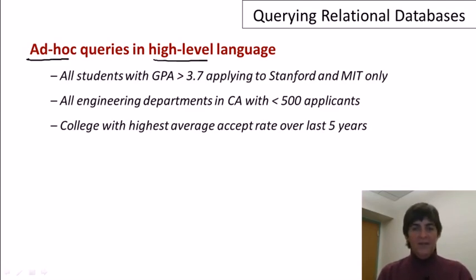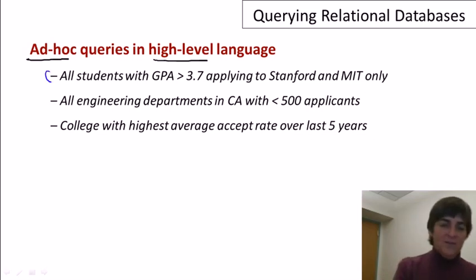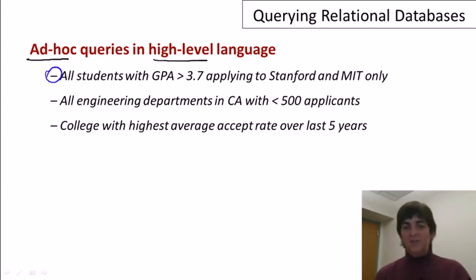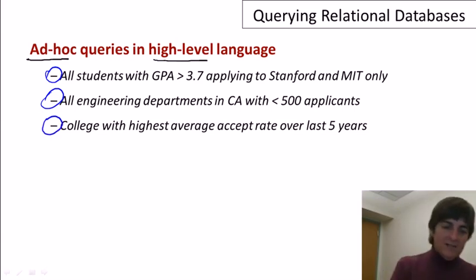Let's look at an example of a few queries. Let's go again to our imaginary database of students who are applying to colleges. Here's just three examples of the types of things that you might ask of a relational database. You might want to get all students whose GPA is greater than 3.7 who are applying to Stanford and MIT only. You might want to get all engineering departments in California with fewer than 500 applicants. Or you might ask for the college with the highest average accept rate over the last five years.